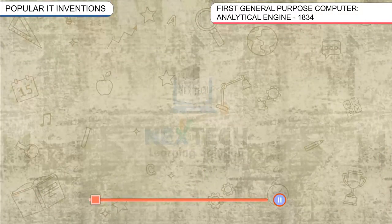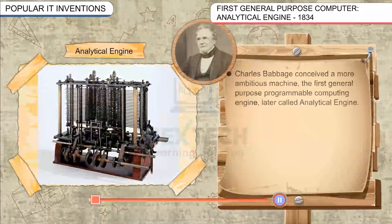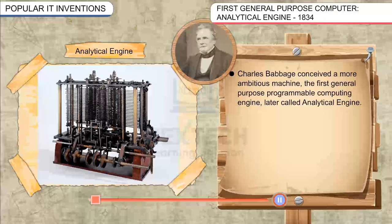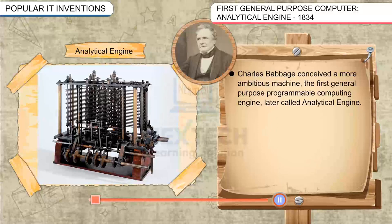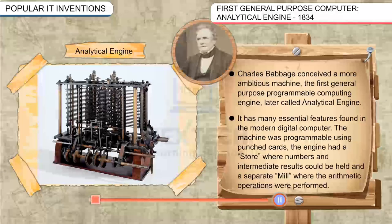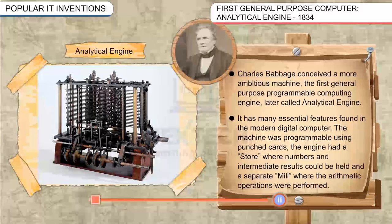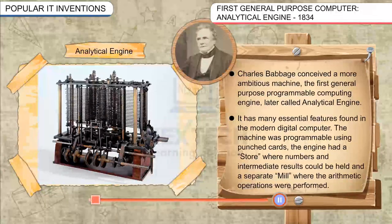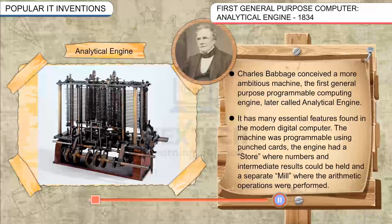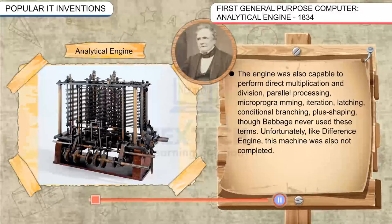First General Purpose Computer — Analytical Engine, 1834. Charles Babbage conceived a more ambitious machine, the first general purpose programmable computer engine, later called the Analytical Engine. It has many essential features found in the modern digital computer. The machine was programmable using punched cards. The engine had a store where numbers and intermediate results could be held, and a separate mill where arithmetic operations were performed.